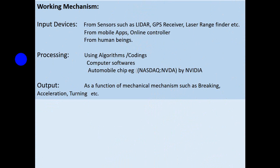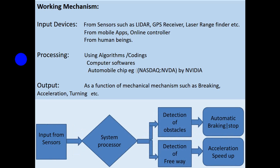Working Mechanism. We can explain the working mechanism of the driverless vehicle as an electronic system where we give inputs from devices such as sensors, LIDARs, GPS receiver, laser range finder, and others, and also from mobile apps, online controllers, and human beings. In the processing unit, codes and algorithms are used — computer software and automobile logic — to analyze the data provided by the sensors.